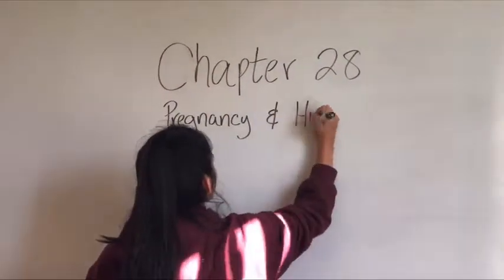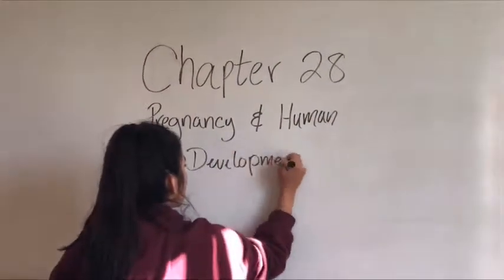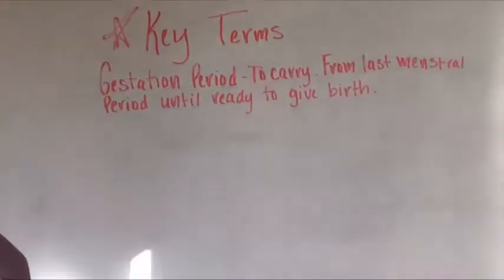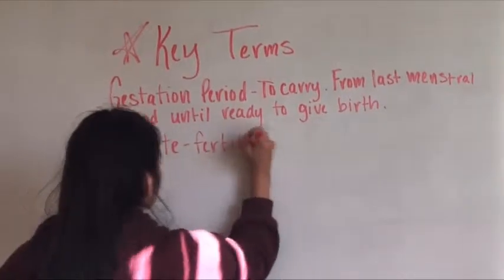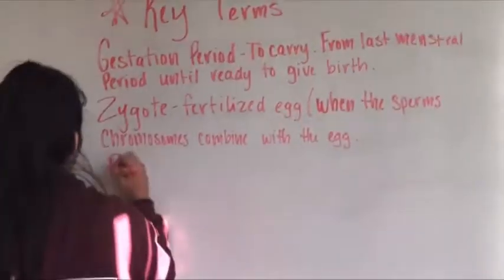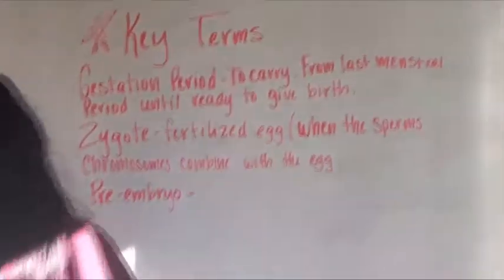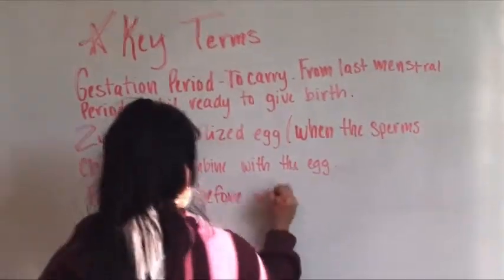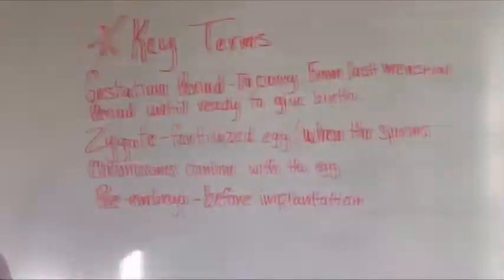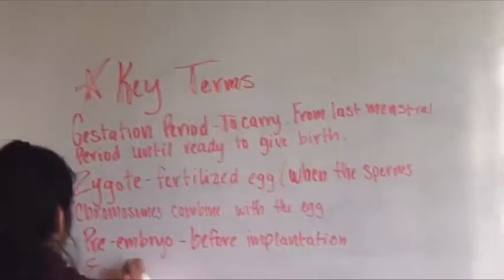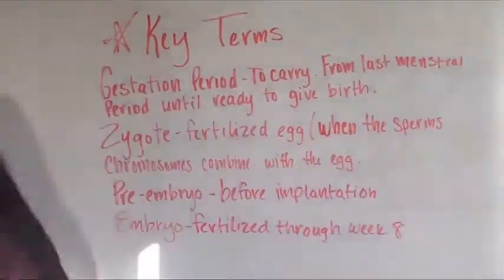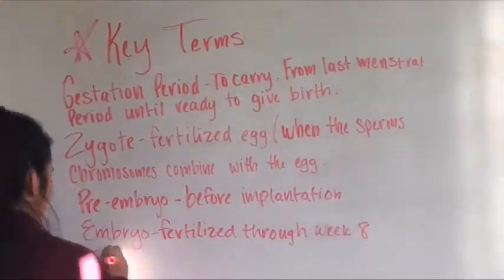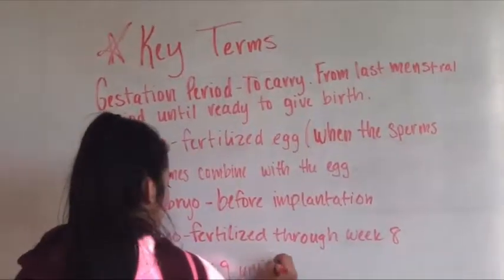Pregnancy and Human Development. The main terms for this chapter: gestation period, which means to carry, begins from the latest menstrual period until ready to give birth. A zygote is a fertilized egg. Pre-embryo is an embryo from the first 14 days after fertilization before implantation. Embryo is fertilization through week 8, and a fetus is from week 9 through birth.